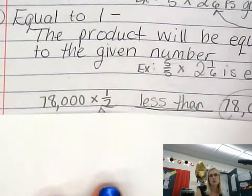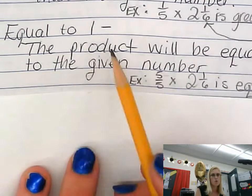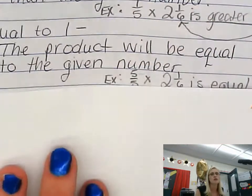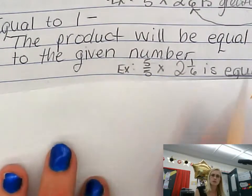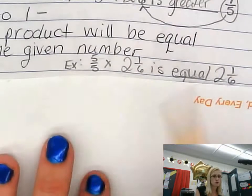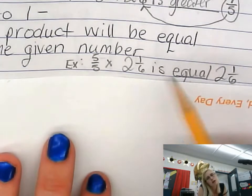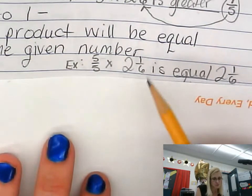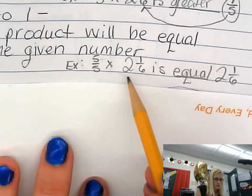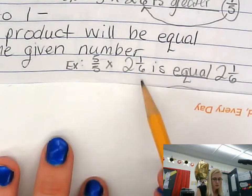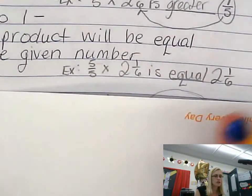The last rule: if the other factor is equal to 1 whole, the product is going to equal the given number. For example, 5 and 5/5ths times 2 and 1/6th. Since 5/5ths equals 1 whole, then 2 and 1/6th times 1 whole is actually equal to 2 and 1/6th. I'm not really doing anything to it — just leaving it the same.